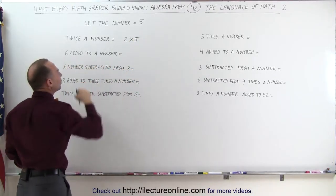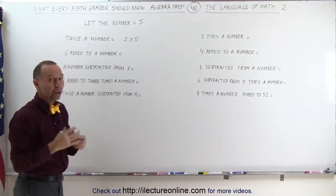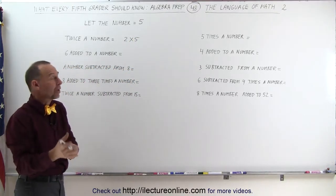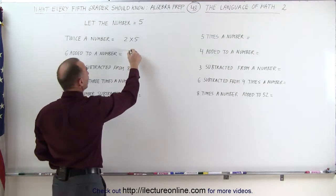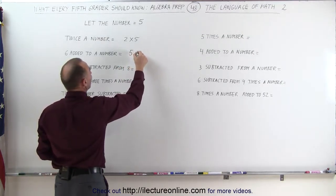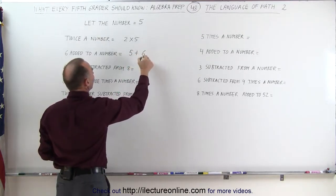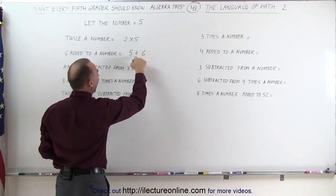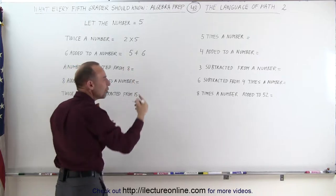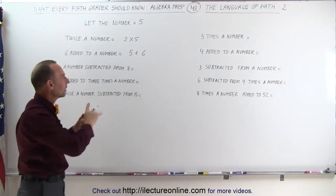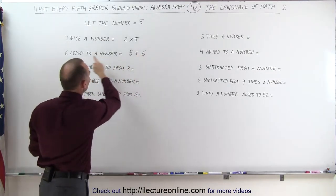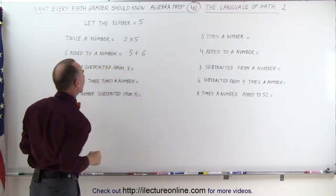6 added to a number. If the number is 5 and we want to add 6 to it, we write the number first and then we add 6 to that. So that's 6 added to 5. Notice that the expression we write mathematically tends to be in reverse the way the words are written.